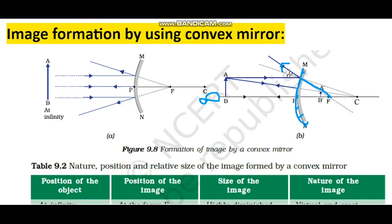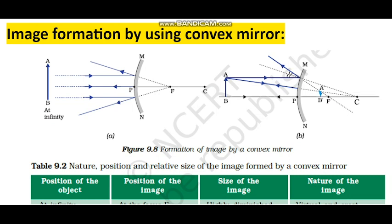The second ray goes toward the center of curvature. We apply the rule for the ray directed toward the center of curvature — it reflects back along the same direction. We produce its imaginary extension behind the mirror. Where these two imaginary rays — through the principal focus and toward the center of curvature — meet behind the mirror, that gives us the image. The size of the object is big but the size of the image is small.